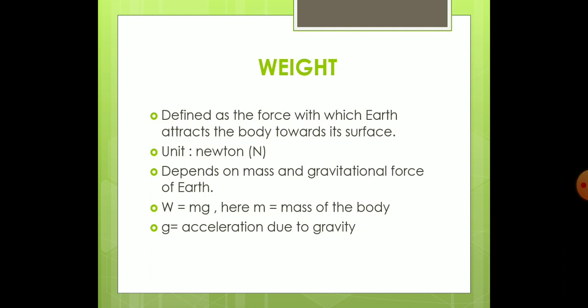For example, if you throw a ball up, it will not stay in the air permanently — it has to come down. Why does it come down? Why can't it go up and up? Because the earth will pull it down. The earth attracts the force — it pulls the ball down. So this force with which the earth attracts a body towards its surface is called weight.